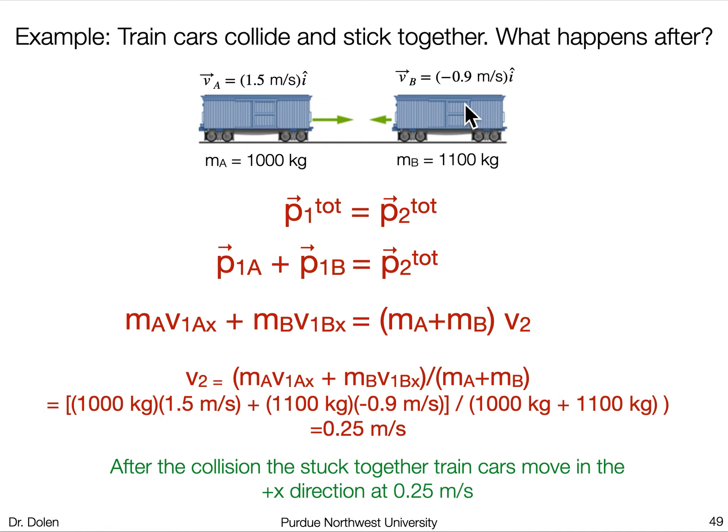Train car B is moving a little bit slower but it's also a little bit heavier. So what's going to happen afterwards? We need to think about what concepts we can use to solve the problem. We know nothing about the force of A on B or the force of B on A. We have no idea how long the collision is going to occur for. We don't know anything about the energy — energy is not conserved here since there's definitely going to be a lot of sound and other things that happen when they stick.